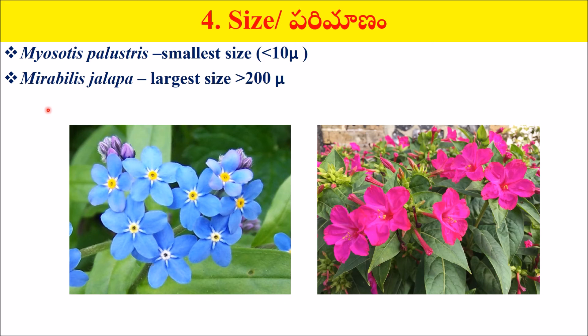Pollen size: less than 10 microns is very small; less than 20 microns is small. Myosotis has the smallest pollen. Mirabilis jalapa, the 4 o'clock plant, has the largest-sized pollen grain — greater than 200 micrometers or microns.